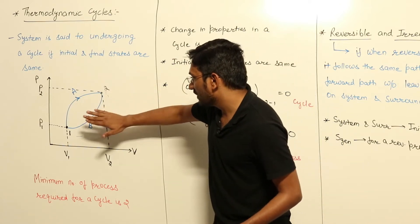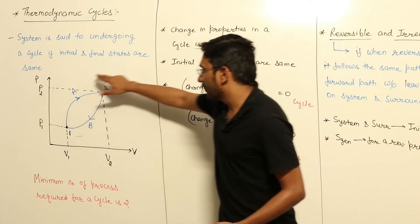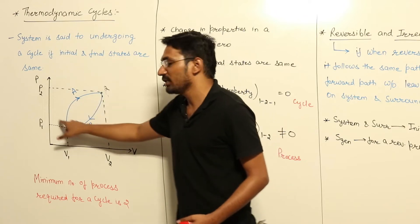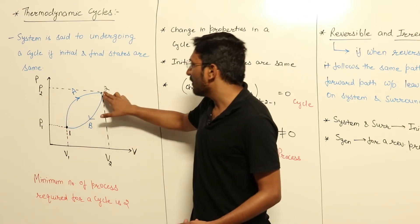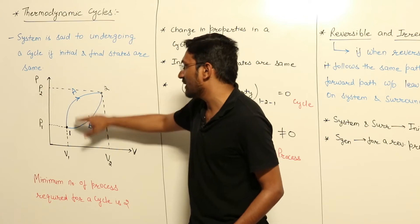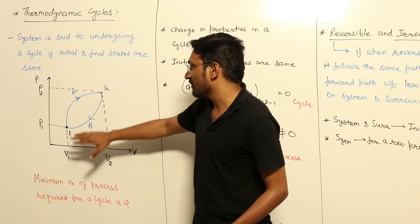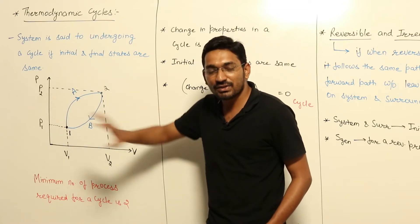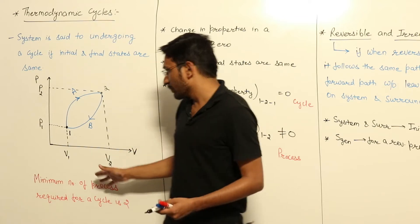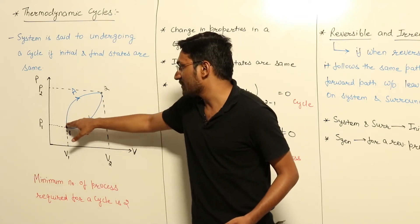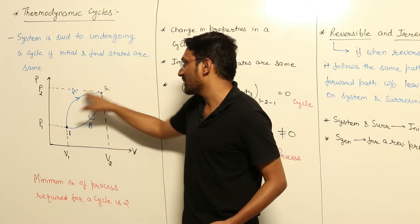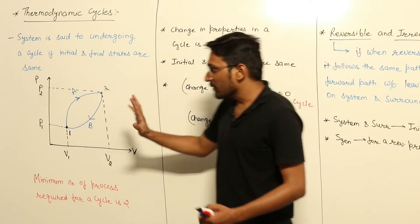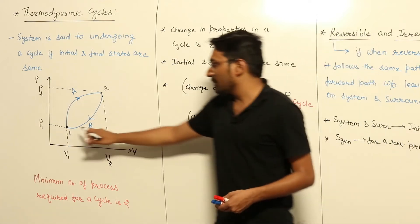The minimum number of processes required to make a cycle is 2. There can be any number of processes making a cycle — for example, 5 processes can also make a cycle — but the minimum is 2. In this example, one process is from 1 to 2 via path A, and the second process is from 2 to 1 via path B.